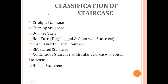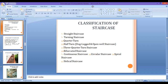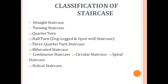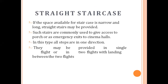The classification of stairs: the first type is straight stairs. The second is turning stairs, which may be of types such as quarter turn, half turn, three-quarter turn, or bifurcated. Then there are continuous stairs, which include circular staircase and spiral staircase, and also the elliptical staircase. These are the major types of stairs generally used in buildings.